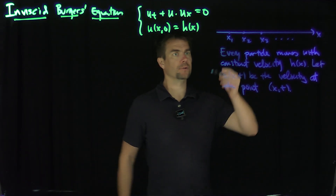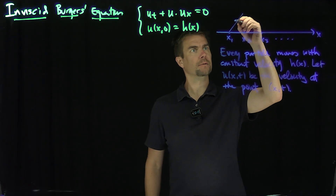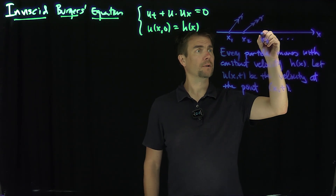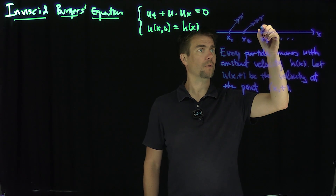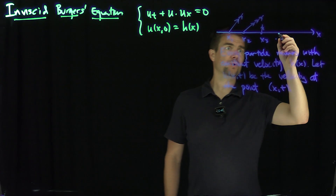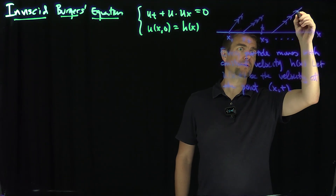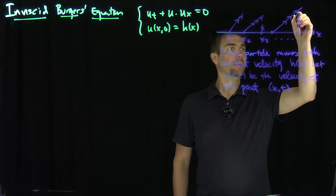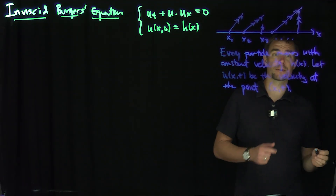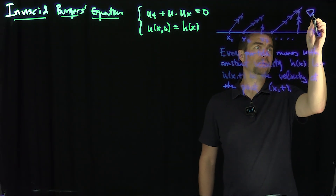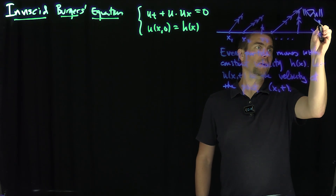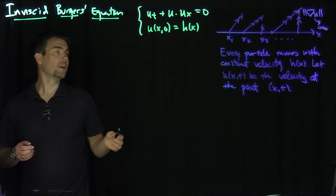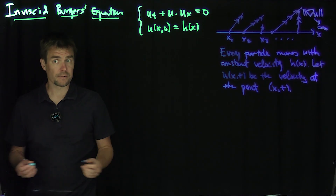Some particles are going to move fast, some might move faster yet, but some could move rather slow. What's going to happen if this point is moving rather fast and this point is moving rather slow? You're going to get a point where there's going to be a gradient discontinuity — the gradient of u is going to go to infinity. It's called a gradient catastrophe. So we can see from this basic idea that Burgers' equation can develop singularities in finite time.